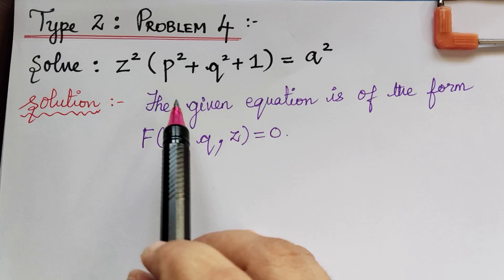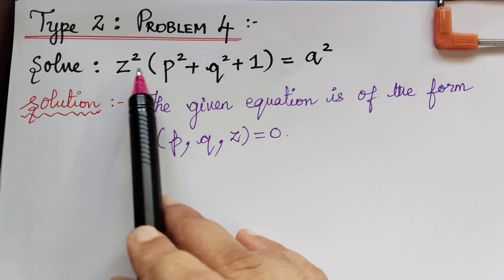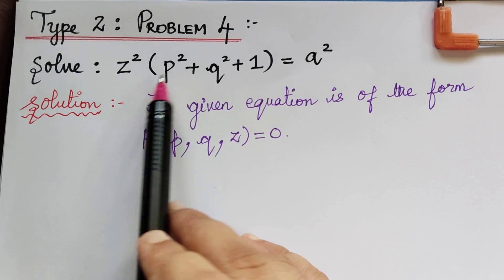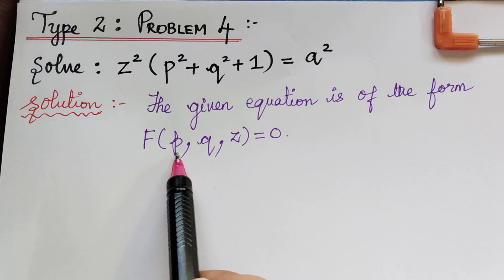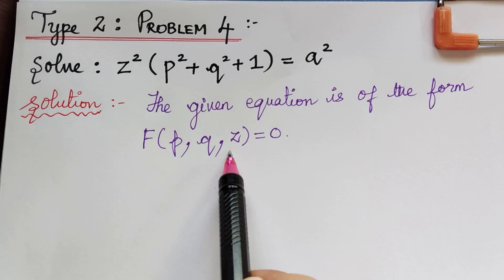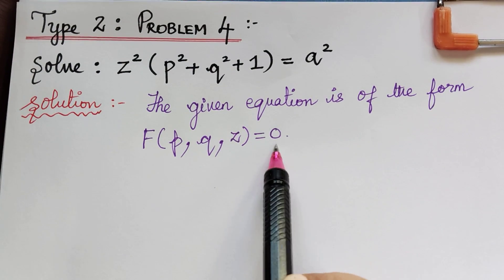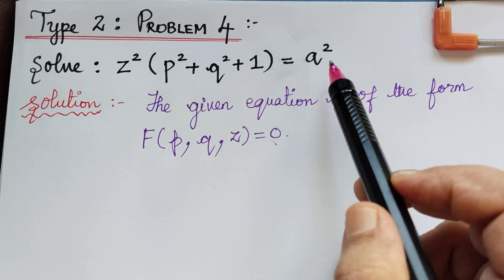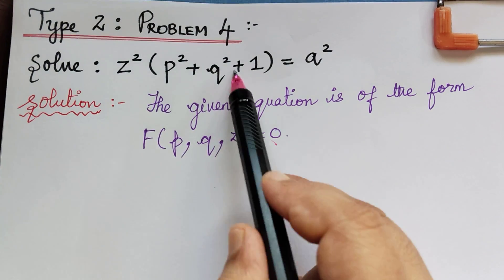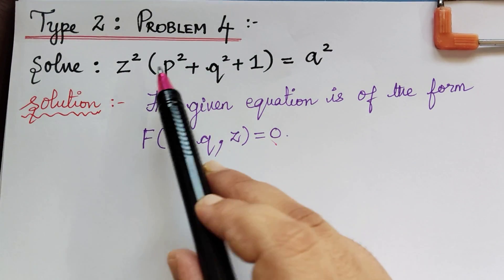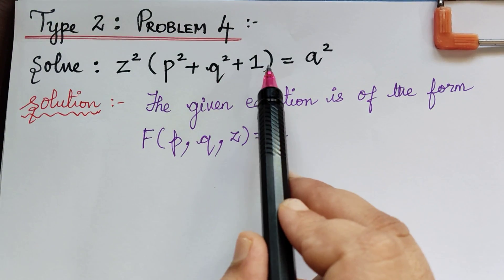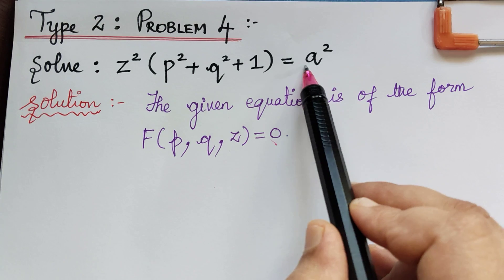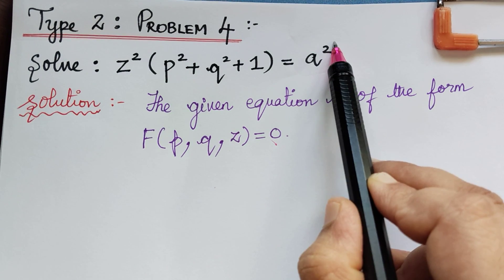We observe that here we have z, p, and q only. So this equation is of the form f(p, q, z) = 0, where a is an arbitrary constant. We have only p, q, and z explicitly present in this equation.